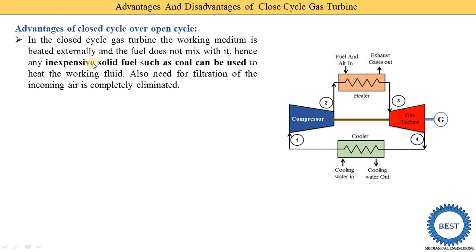Hence, any inexpensive solid fuel such as coal can be used to heat the working fluid. Also, the need for filtration of the incoming air is completely eliminated. In an open cycle gas turbine power plant, we need to install a filter at the inlet of the compressor. But in the closed cycle, this filtration is not required.